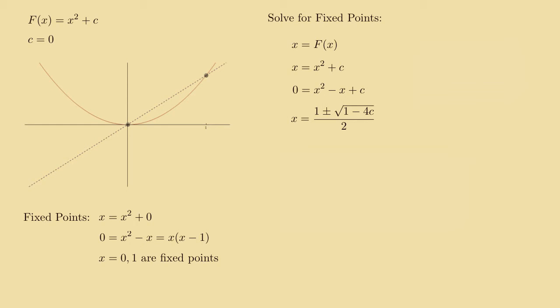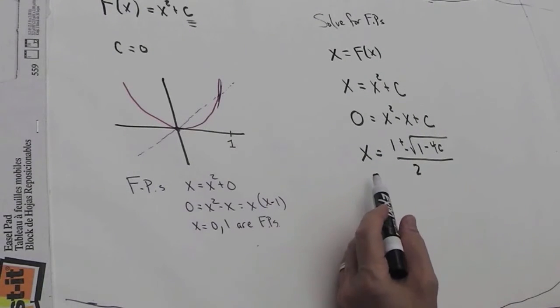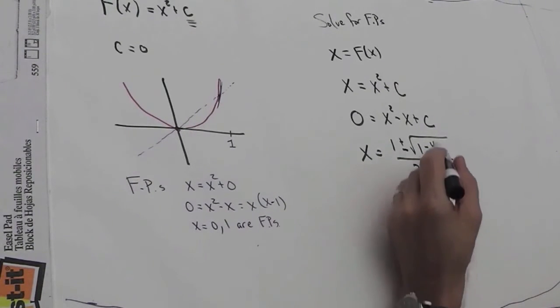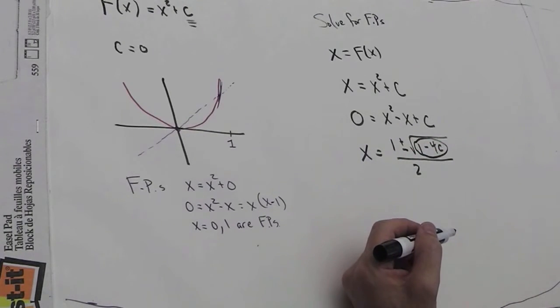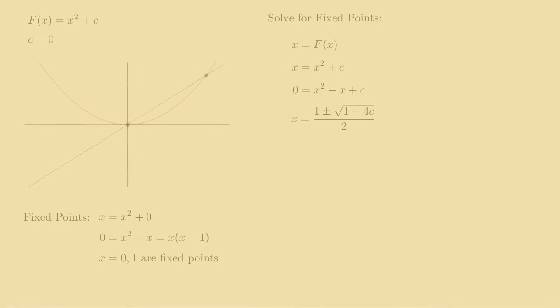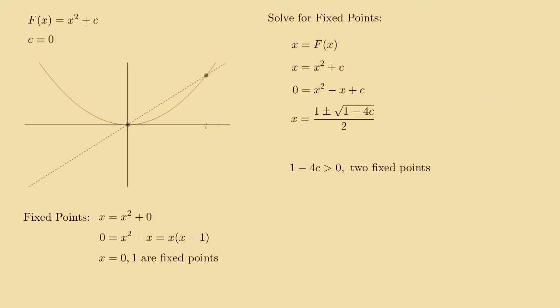So 0 equals x² - x + c. Let's use the old quadratic formula to tell us what x is. So x equals 1 plus or minus the square root of (1 - 4c) all over 2, applying the quadratic formula to this quadratic. And so if we look at this formula for the fixed point x, we see that we get 2 answers from the plus or minus, provided what's under the square root sign is positive. So when 1 - 4c is greater than 0, we get 2 fixed points. If 1 - 4c is equal to 0, then we won't have anything under the square root and we'll just get 1 fixed point, x equals 1/2 actually.